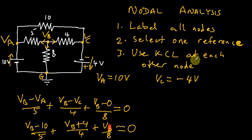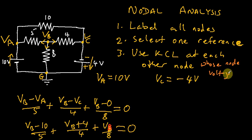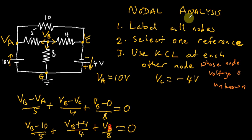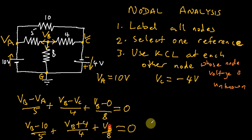So we can modify the third step to say: use KCL at each other node whose node voltage is unknown. Like with every other video, I'll pause at this point and you can go ahead and find the value of VB. It should be quite easy — I suggest you take an LCM and solve. See you in the next video.